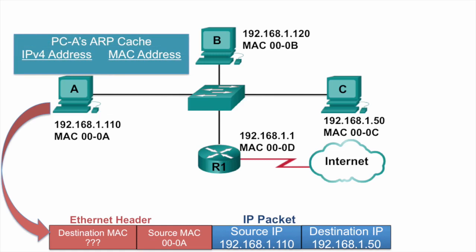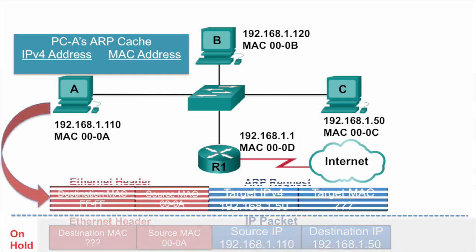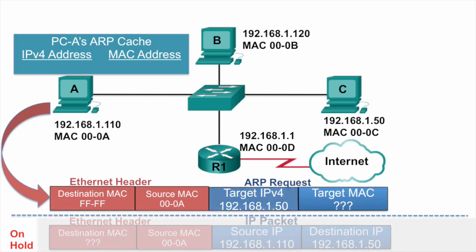So PCA checks its ARP cache for the IP address 192.168.1.50. Because it is not in its ARP cache, it will put the packet on hold and create an ARP request. The ARP request contains the target IPv4 address, which is known by PCA, and the target MAC address, which is unknown — this is what PCA is wanting to find out. The ARP request is sent as a broadcast, so everybody on the network will need to examine this Ethernet frame and process the ARP request.